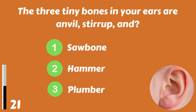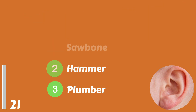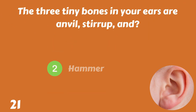The three tiny bones in your ears are anvil, stirrup and sawbone, hammer or plumber. The answer is hammer.